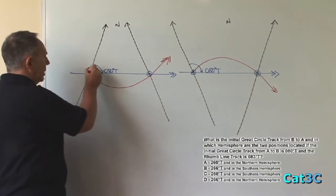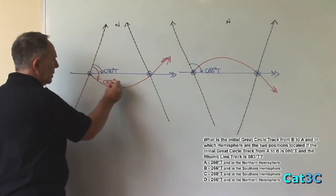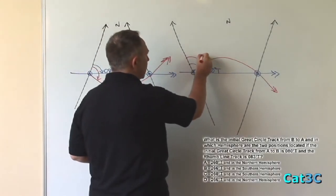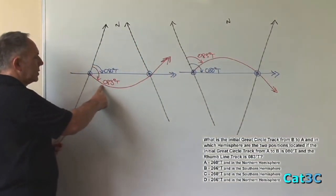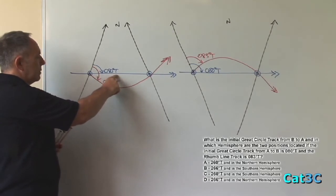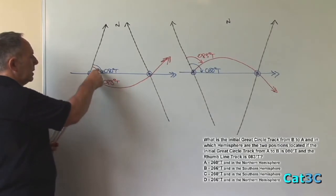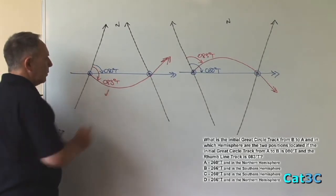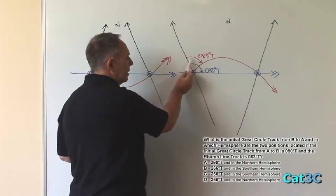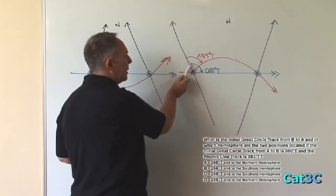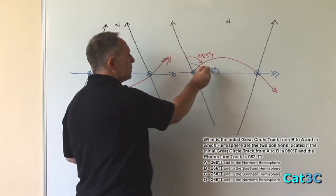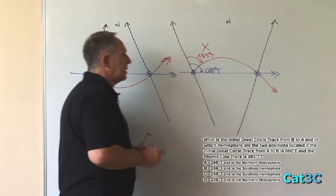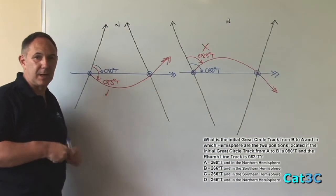We're told the rum line track is 083 degrees true. Comparing the rum line track 083 degrees true with the great circle track 080 degrees true, great circle track, so that would be correct. In the Southern Hemisphere, we can see that the 083 degree true track, the rum line track, appears to be smaller than the 080 degree true great circle track. So 83 is not a smaller number than 80, so that cannot be correct. So it cannot be in the Southern Hemisphere, it must be in the Northern Hemisphere.